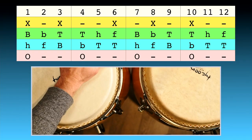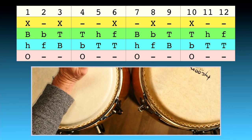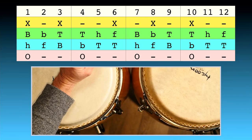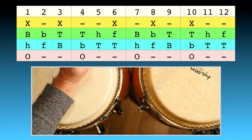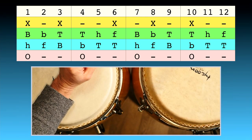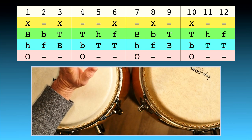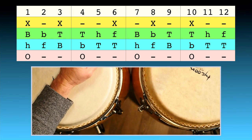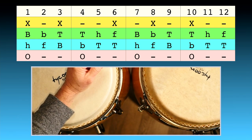Draw your attention to the top row, the white row — that is our count. We're doing two bars of 6/8, so I have it numbered up to 12. The second row is our 6/8 clave, related to Rumba clave. The top colored row, the green row, is our high drum. The blue row is the low drum. And the bottom row is our dance step — I've got that in the shekere part.